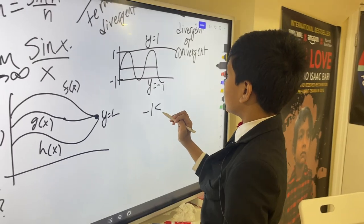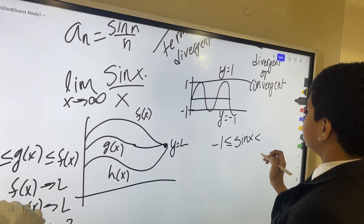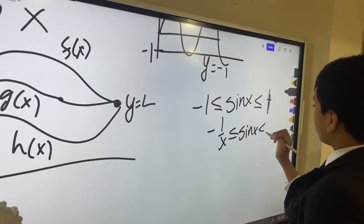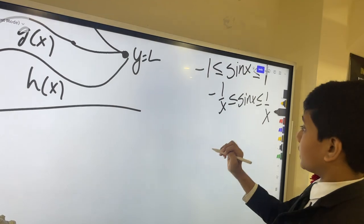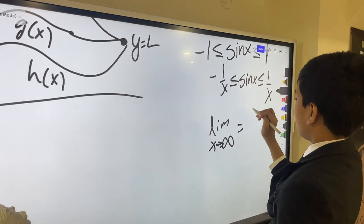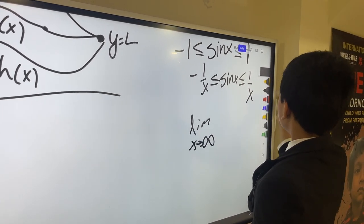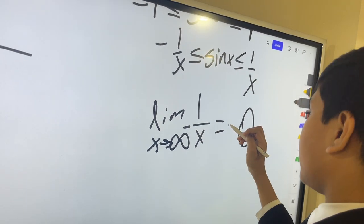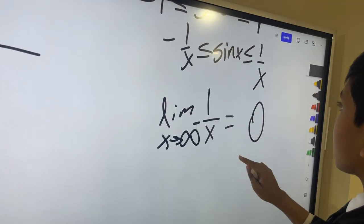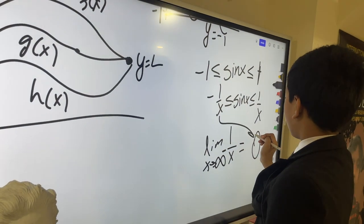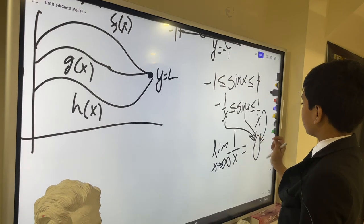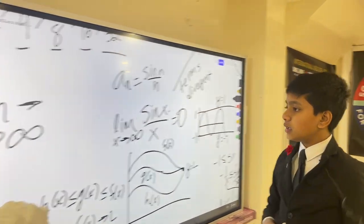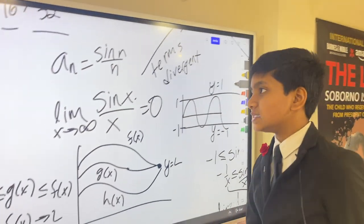So basically, minus 1 is less than or equal to sine x is less than or equal to 1. And here you can have your big realization, divide everything by x. The limit as x approaches infinity of 1 over a really big number is effectively 0. Same thing for the negative. You can't have negative 0. That's the same as 0. So that means that if minus 1 over x is approaching 0, 1 over x is approaching 0, sine of x over x will also approach 0. So if we can find that out, we can decide that this is a convergent function.